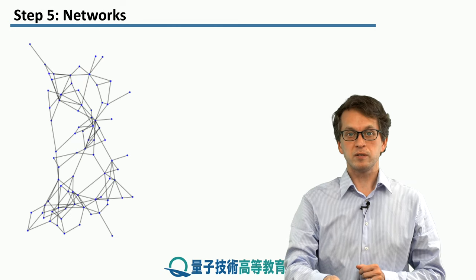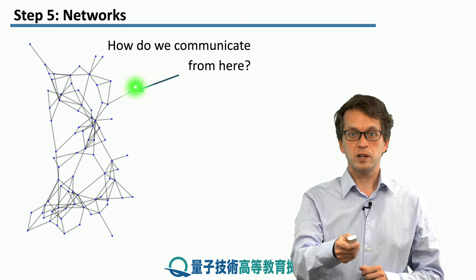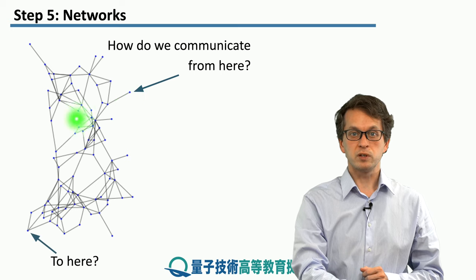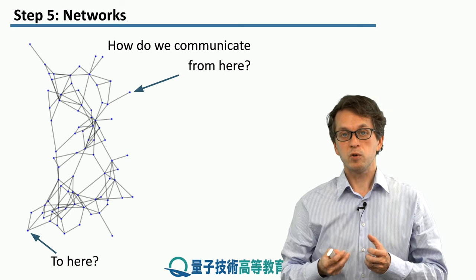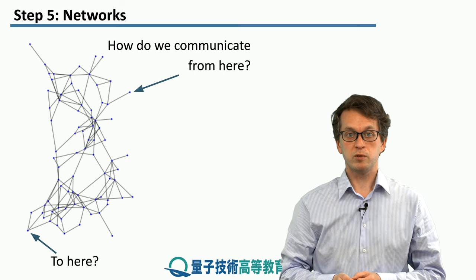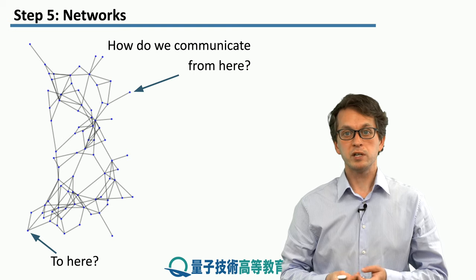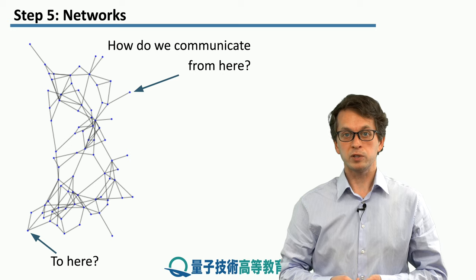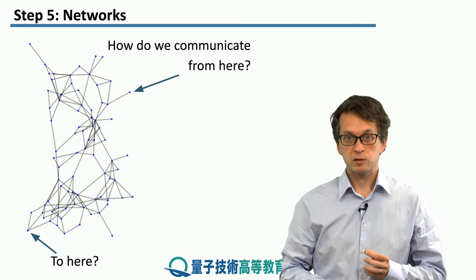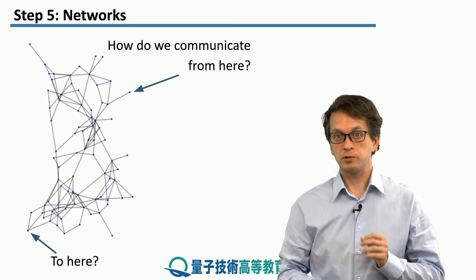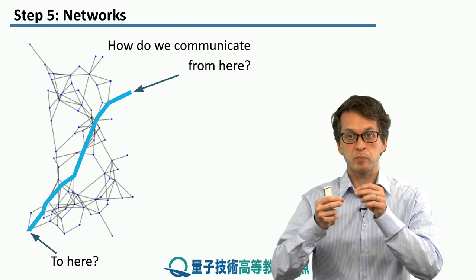Let's say we have some complicated network, and we wish to communicate from one point all the way to another point. The job of a network is to establish a connection between those two nodes. In quantum networks, we wish to establish an entangled pair between those two nodes, such that we can use it for quantum key distribution, teleportation, or any other purposes. So how does the network know how to do it? It has to first contend with routing.